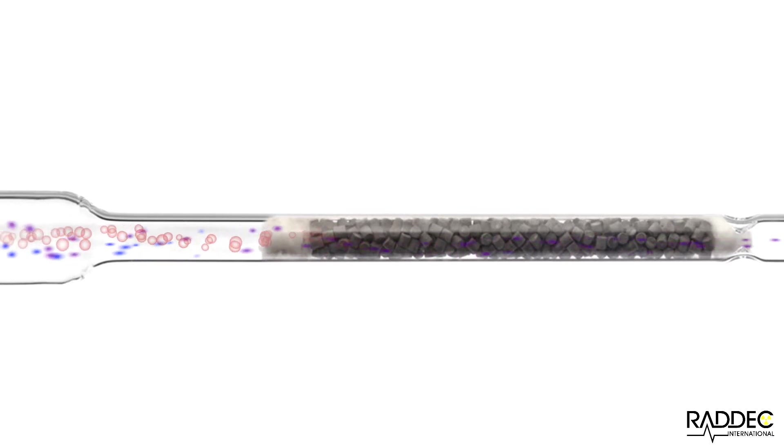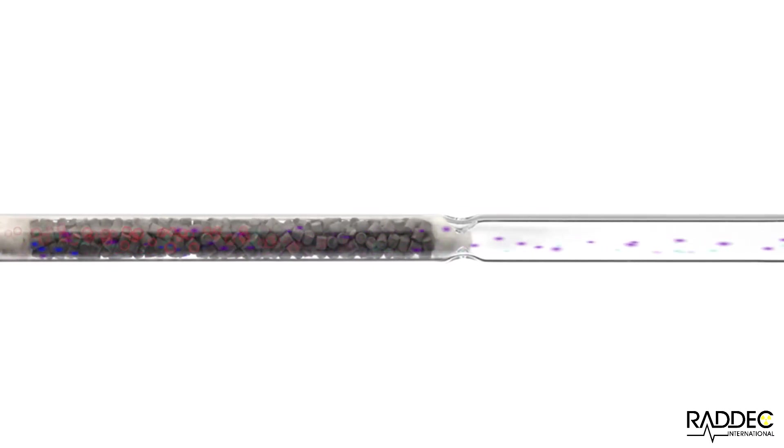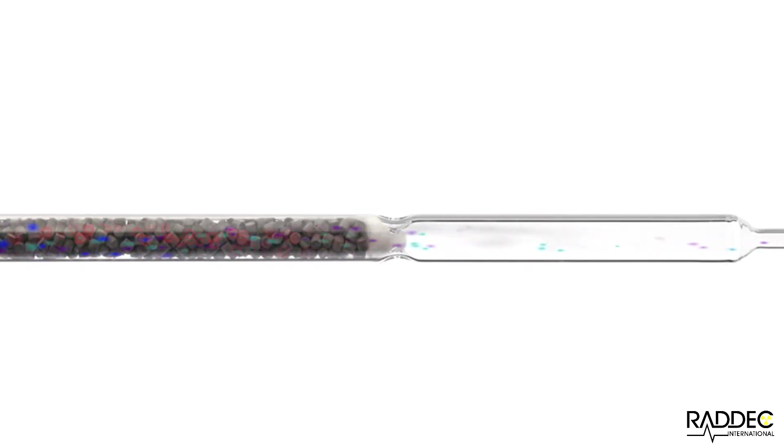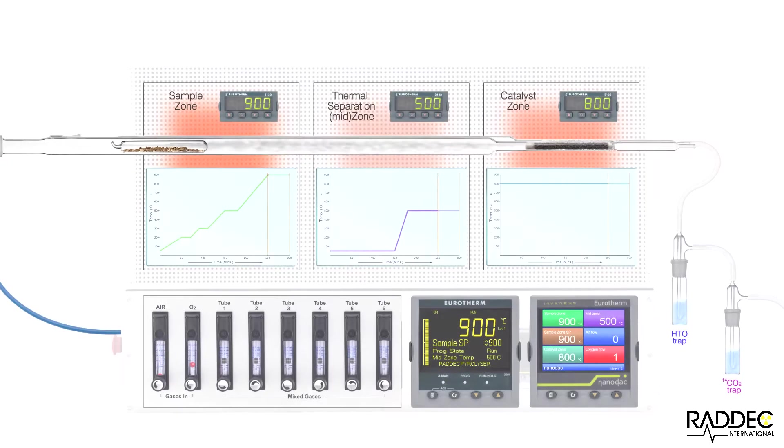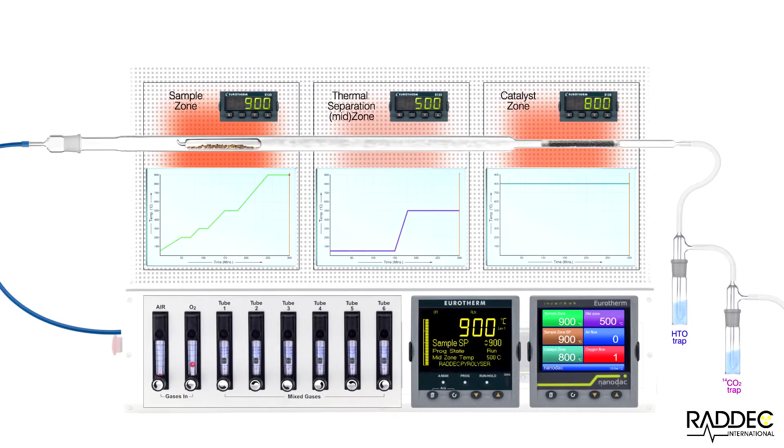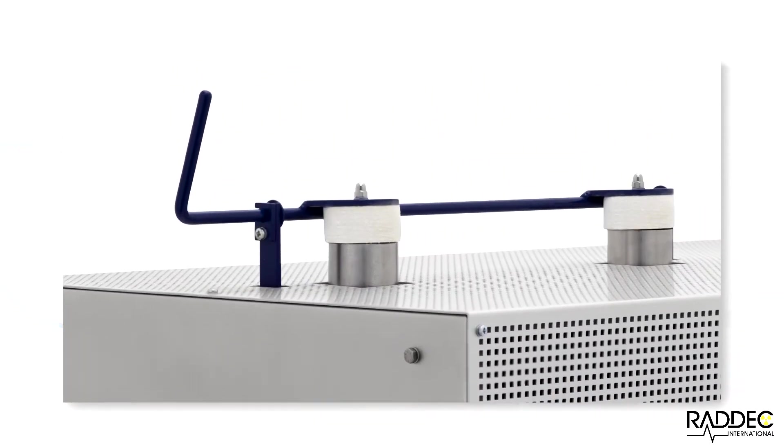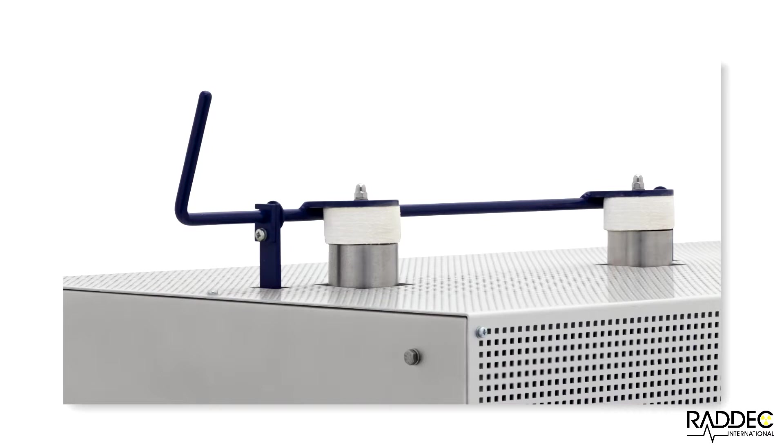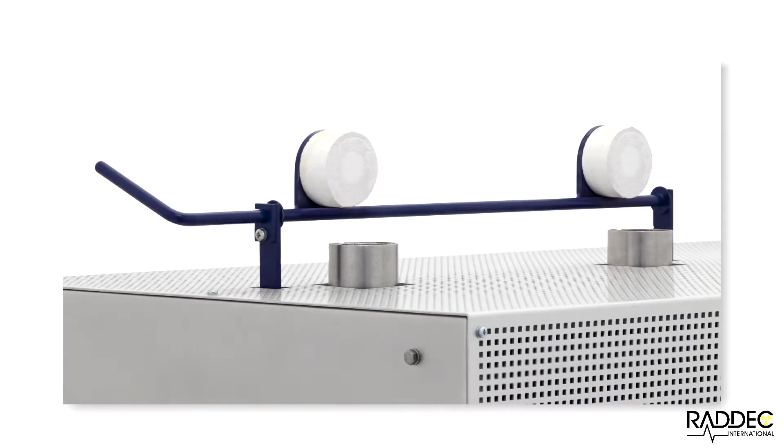All combustion products liberated over the temperature range 50 to 900 degrees Celsius are fully oxidized after passing through the platinum alumina catalyst bed. These oxidized products, tritiated water and carbon-14 labelled carbon dioxide, collect in their own external bubbler traps. At the end of a run, the analyst can decide to rapidly cool the sample and mid zones by using the integrated forced air cooling system.